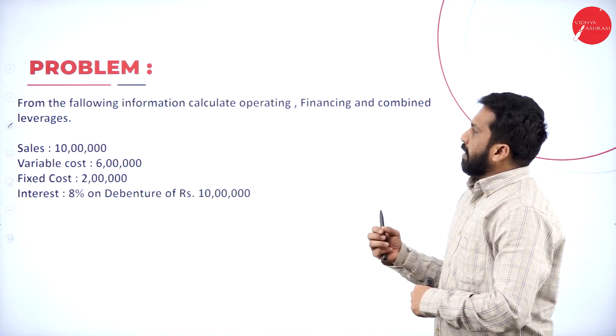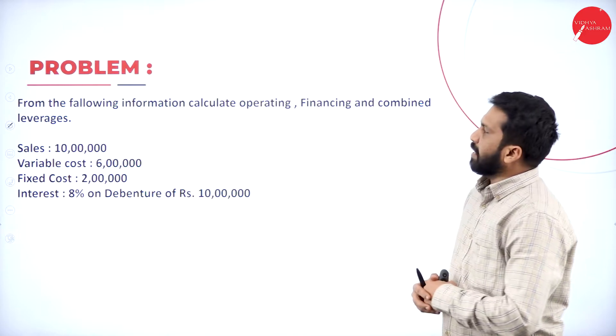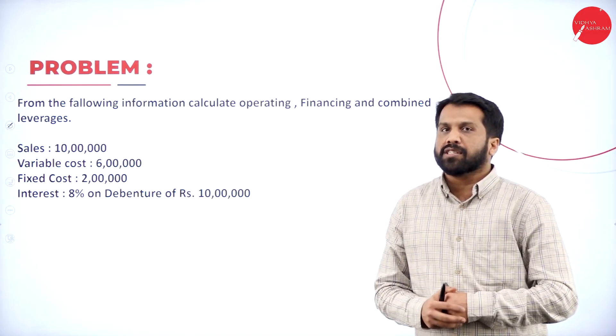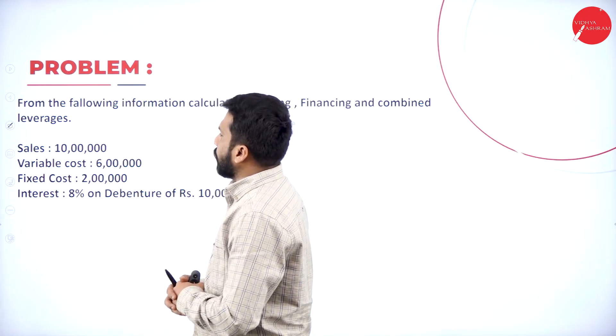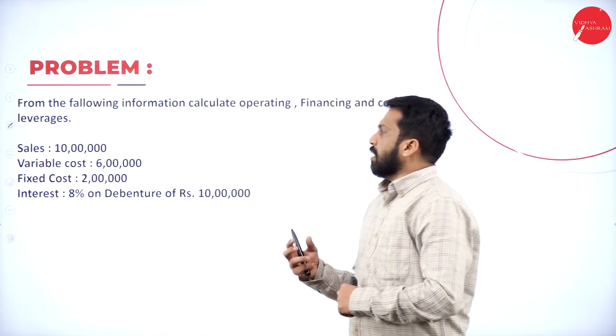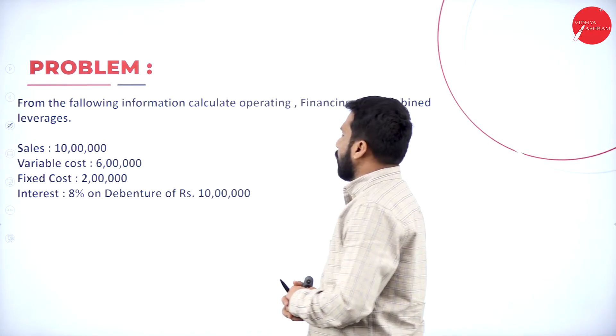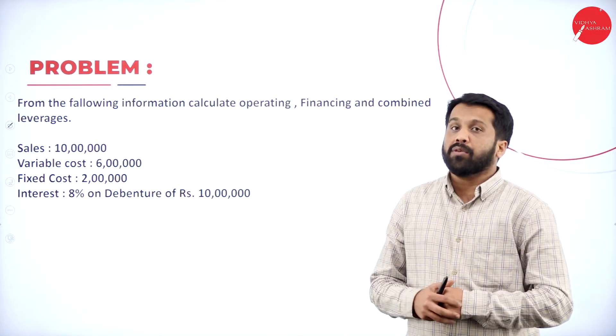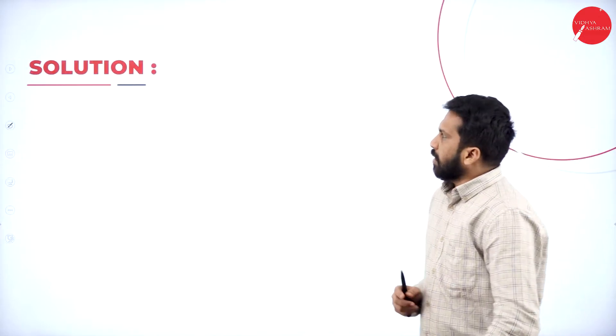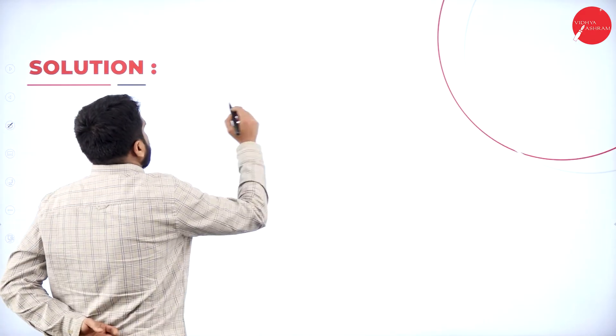So, we will go with the problems like from the following information. Calculate operating, financing and combined Leverages. Now, so you have sales of rupees 10 lakh, variable cost 6 lakh, fixed cost 2 lakh, interest 8% on debenture of rupees 10 lakh. All this information you have. How to do this? I will show you. The format is very simple. We have to prepare a table. What is a table like? What is your sales?